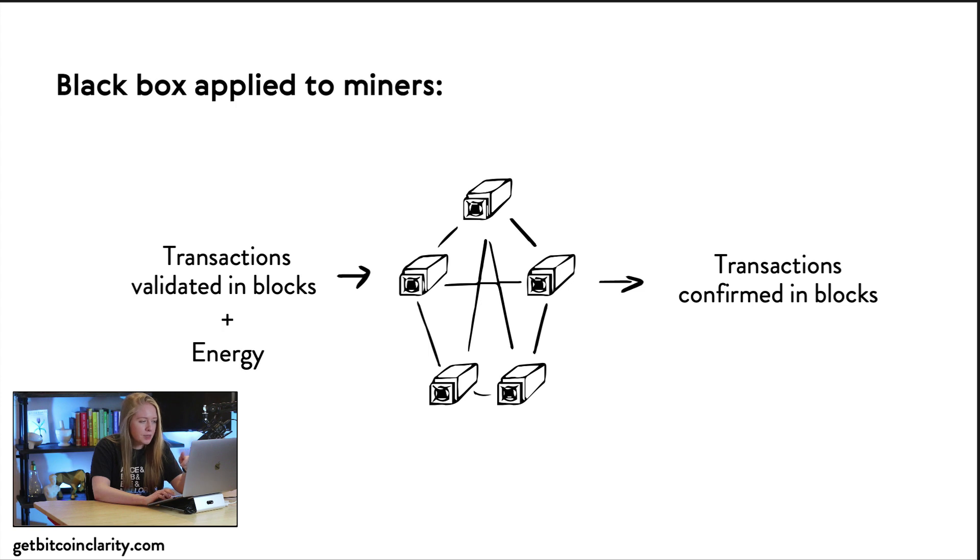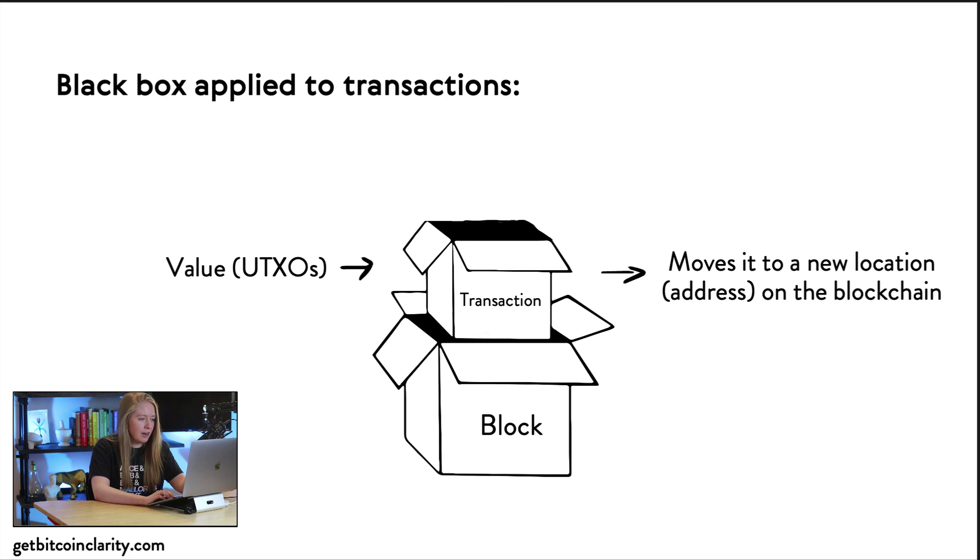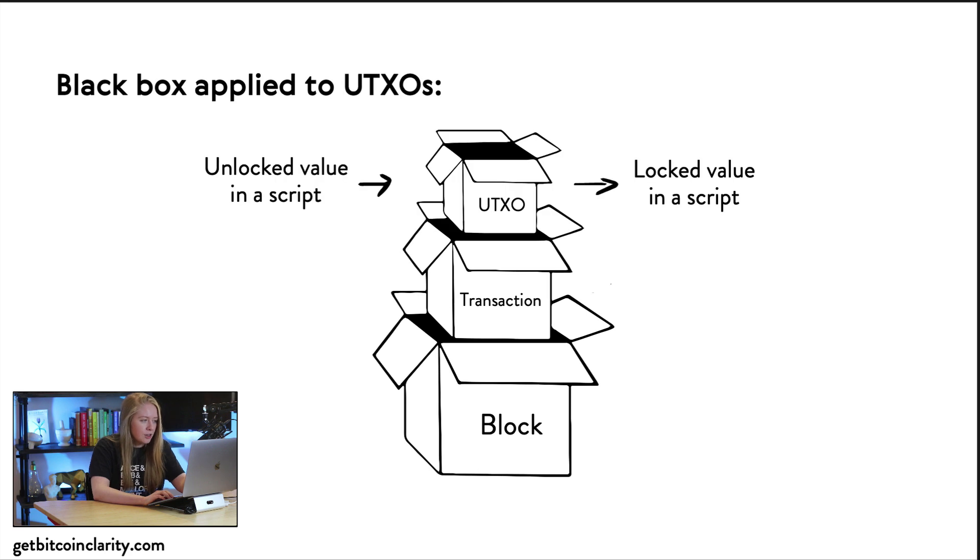We see how this is a valuable mental model, so we can apply this to different areas of thinking in the blockchain. We have the block at the base of this that takes in validated transactions, confirms transactions in a block. We have transactions that take in UTXOs and then move that to a new address on the blockchain. We've got UTXOs that have a locking and unlocking script, so you take in UTXO starts off as an input, so it's sort of like this unlocked value becomes locked value.